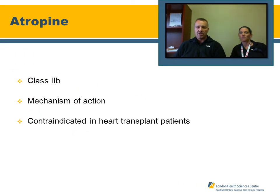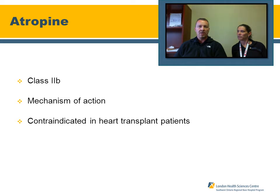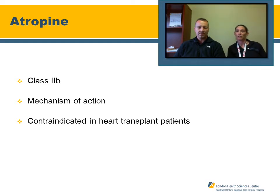Atropine is classified as a parasympatholytic medication. It works by blocking muscarinic receptors from receiving acetylcholine, thereby stimulating more acetylcholine to the nicotinic receptors, decreasing vagal stimulation and increasing heart rate — similar to taking your foot off the brake in a car. Contraindications include allergy or sensitivity, a history of a transplanted heart, hemodynamic stability with a blood pressure of 100 or greater, or hypothermia.